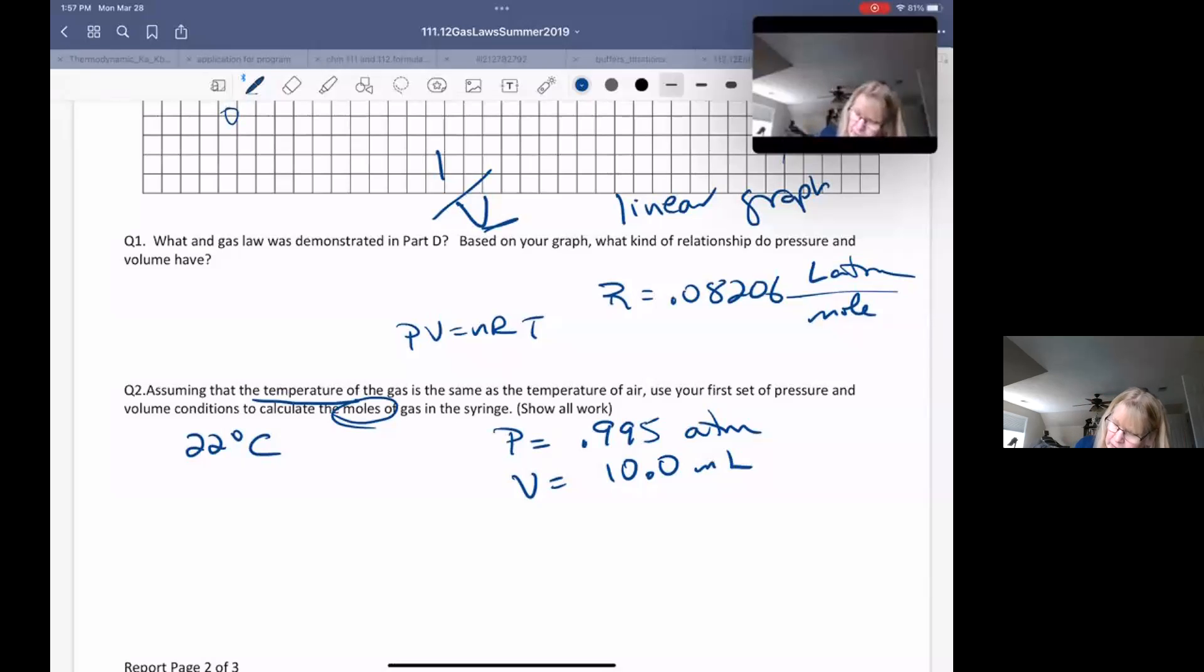We know our temperature has to be in Kelvin, so we're going to add 273 to it. If you have more digits past the decimal than 22, you can include that 0.15, and I would get 295 Kelvins. If I rearrange and solve for n, my n here is going to equal PV over RT. I'm going to plug this in, sorting out my units.